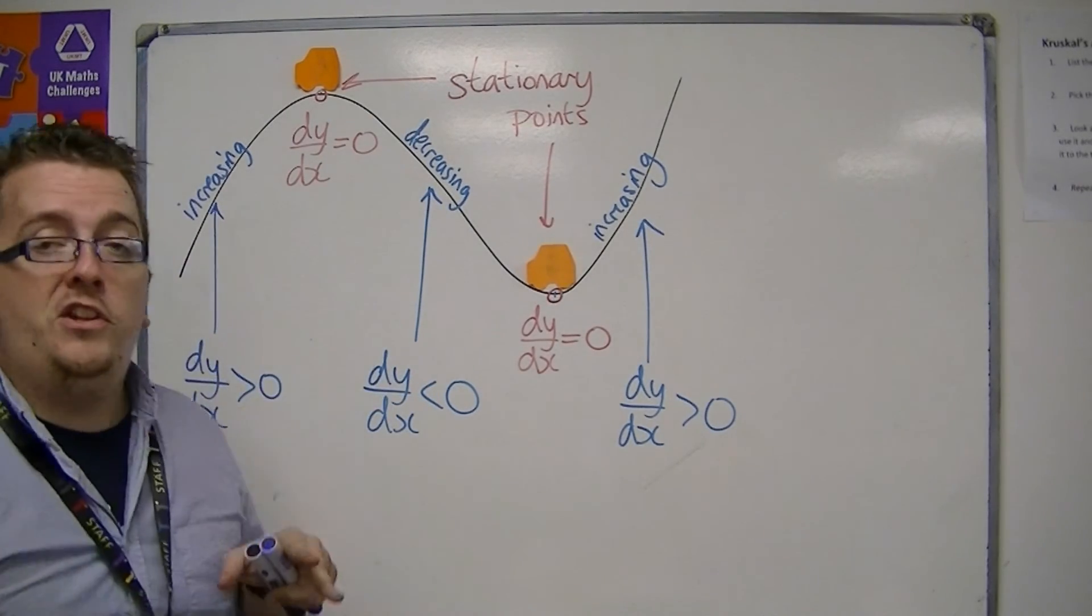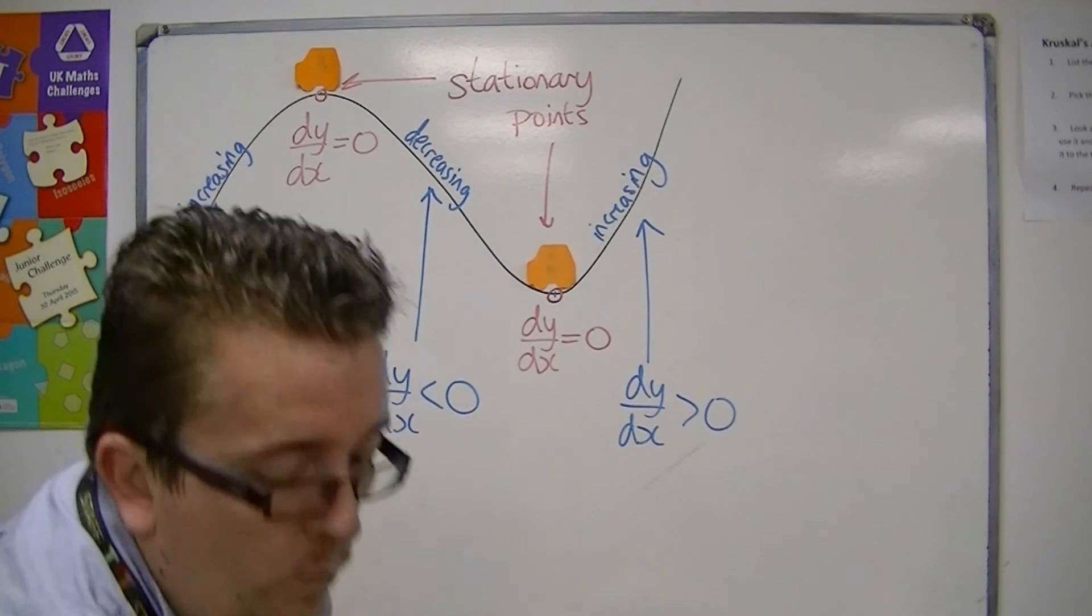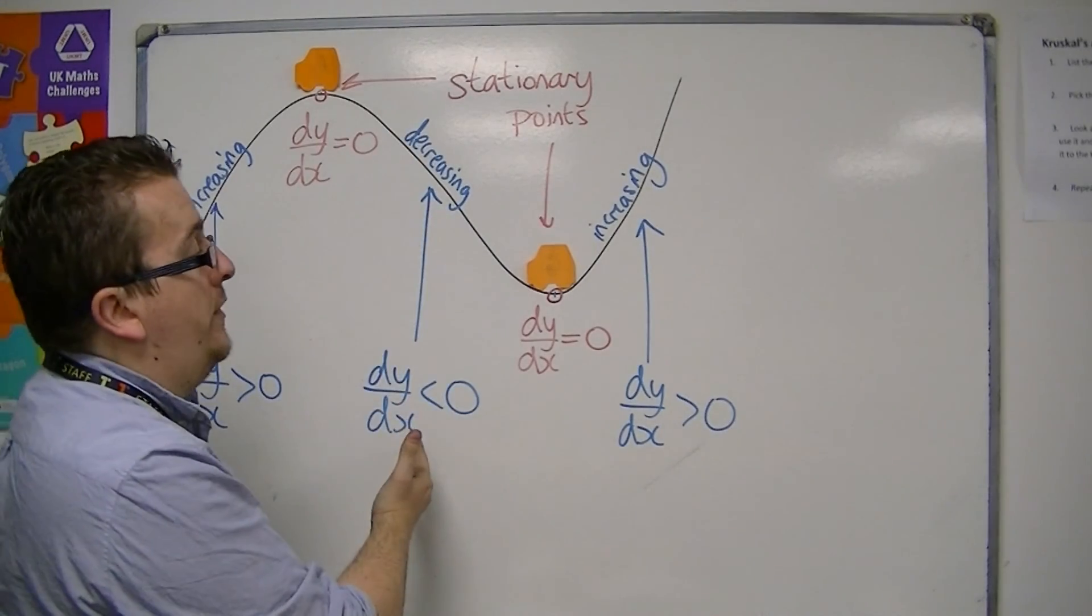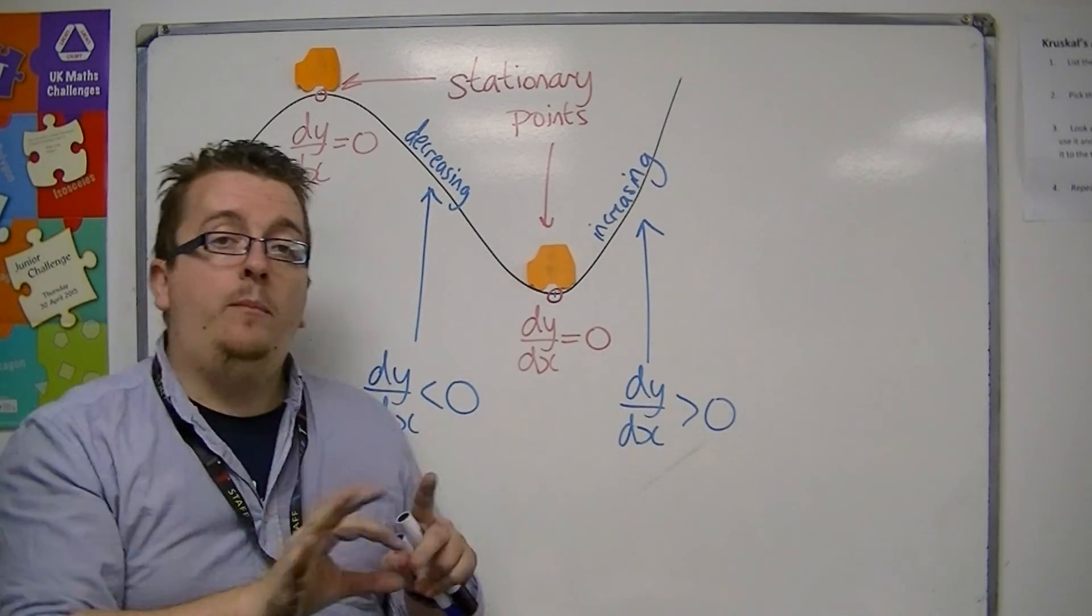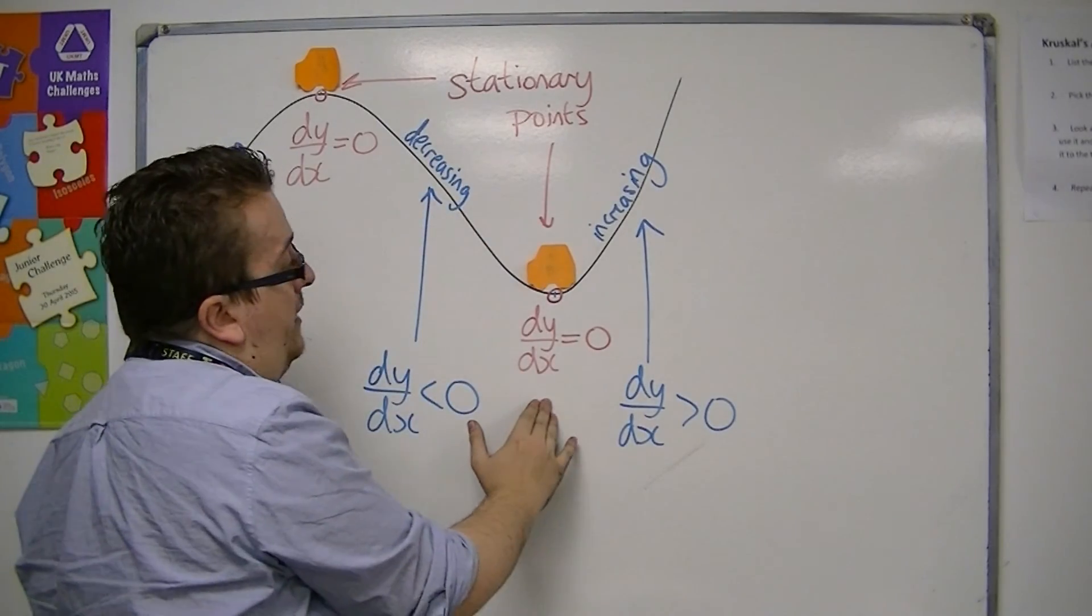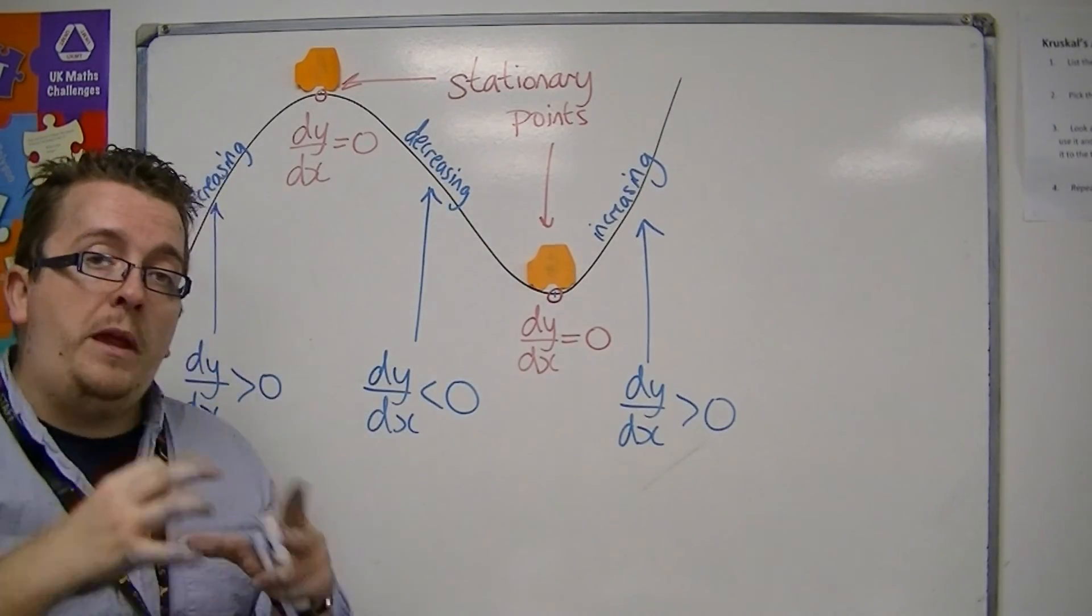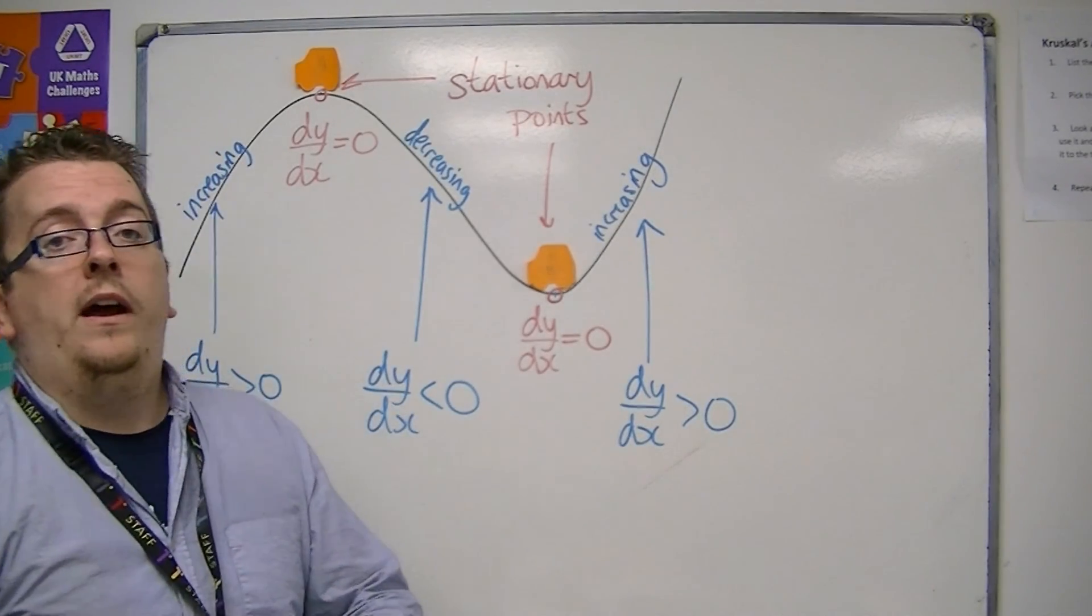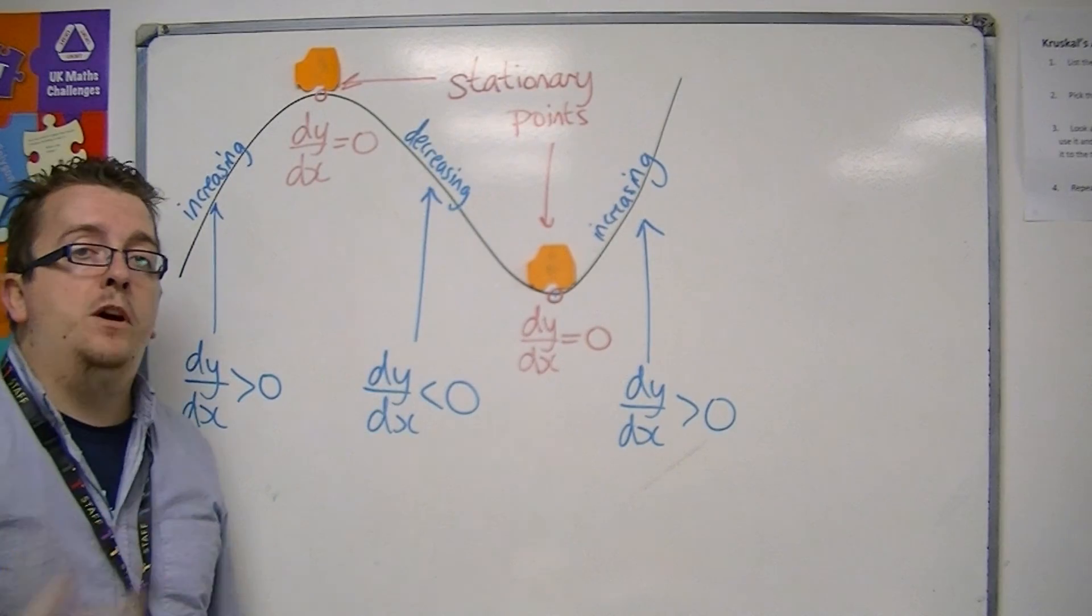So this is the situation that we have. We are now able to identify when a graph is increasing or when it is decreasing, and we're able to identify where the turning points are, where the stationary points are. And that is going to be a great help in making sketches and understanding the curve that much more accurate.